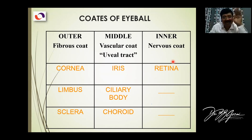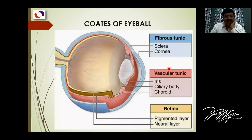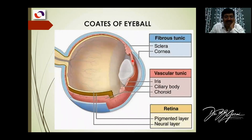The nervous layer is the retina. So these are the three coats. As you can see here, this is the sclera, this is the cornea, and this is the sclerocorneal junction. This is the iris, this is the ciliary body, this is the choroid, and this is the retina.